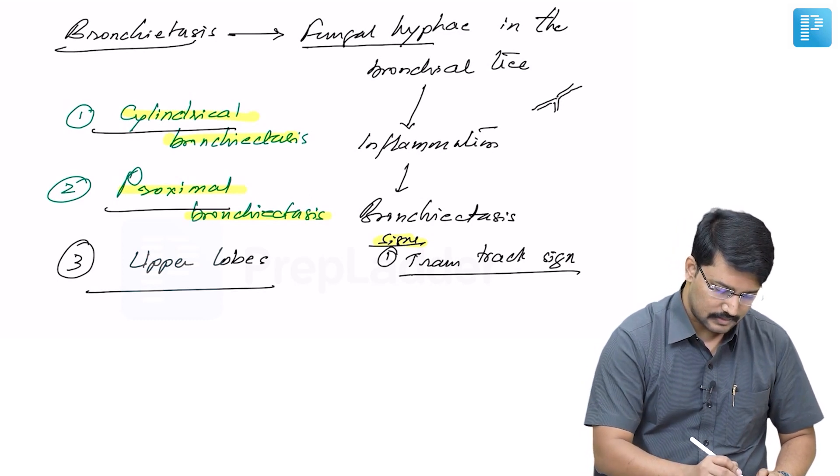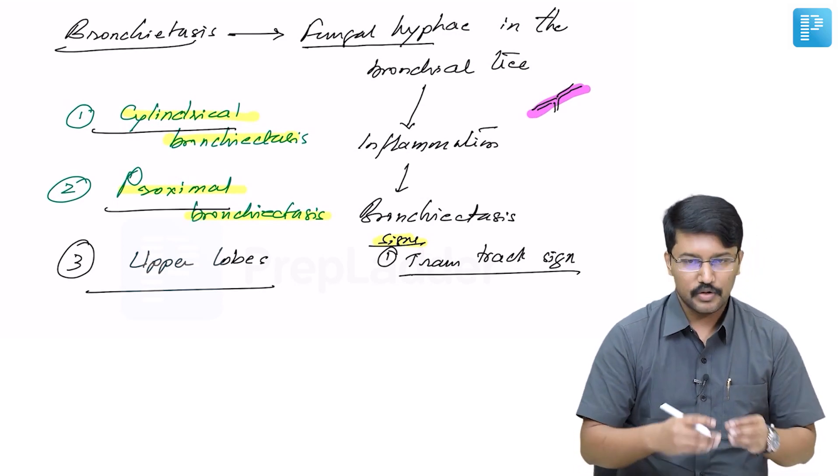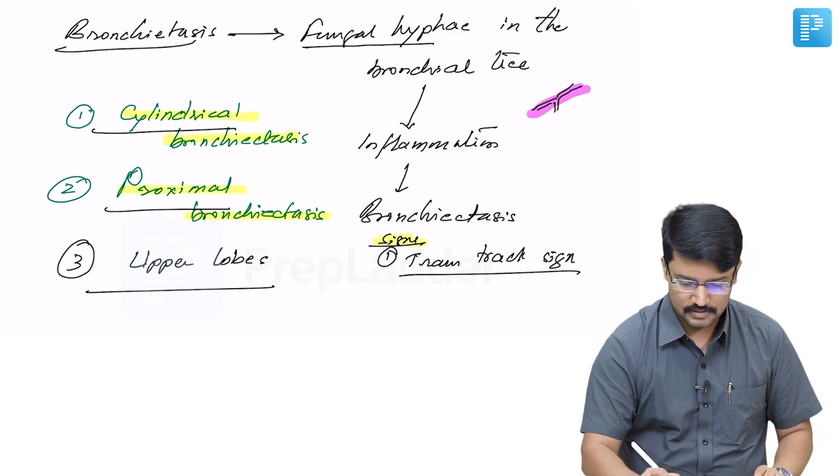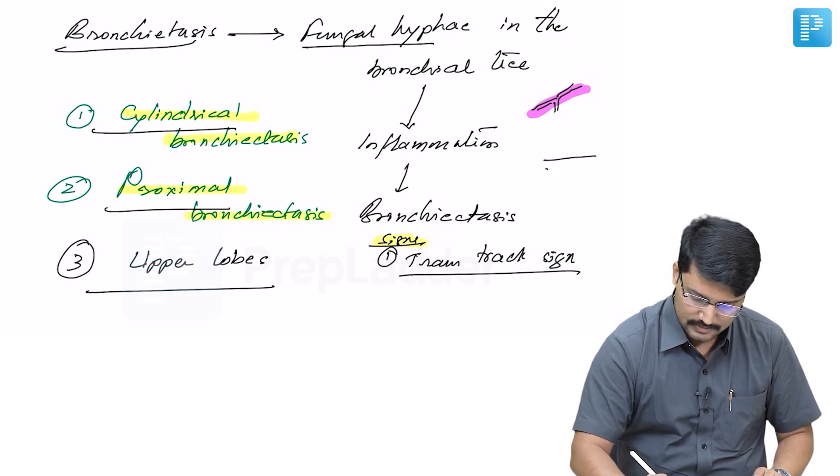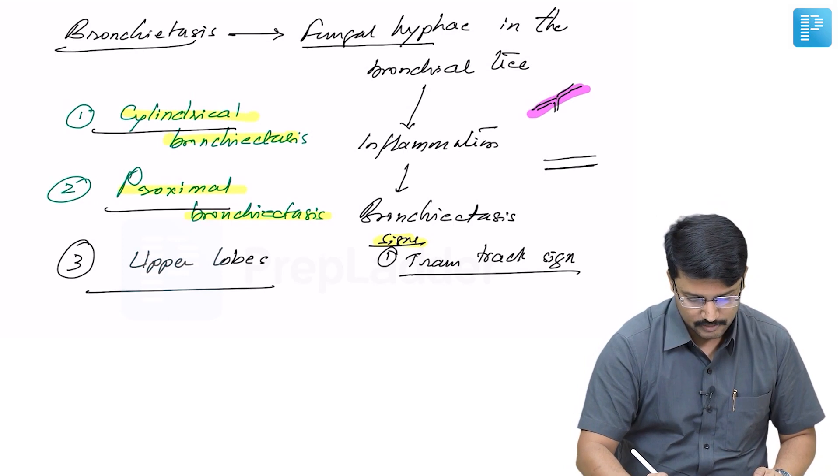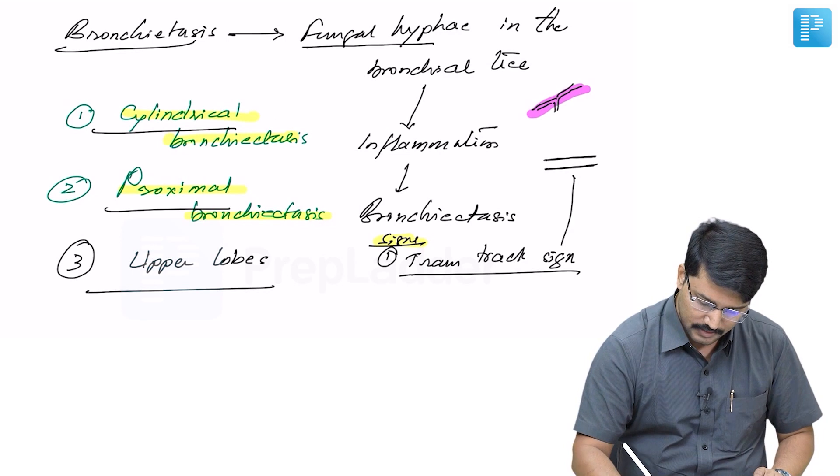This narrowing is not seen when there is mucus plugging and bronchiectasis. The bronchial tree appears as parallel lines, like tram lines or railway tracks. This is what we call the tram track sign.